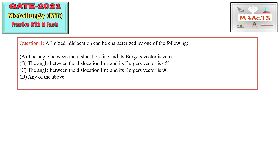The first question: a mixed dislocation can be categorized by which of the following? Option A: the angle between the dislocation line and its Burgers vector is zero. Option B: 45 degrees. Option C: 90 degrees. Option D: any of the above. When the angle is zero, the dislocation line and Burgers vector are parallel — that is a screw dislocation, so option A is incorrect.